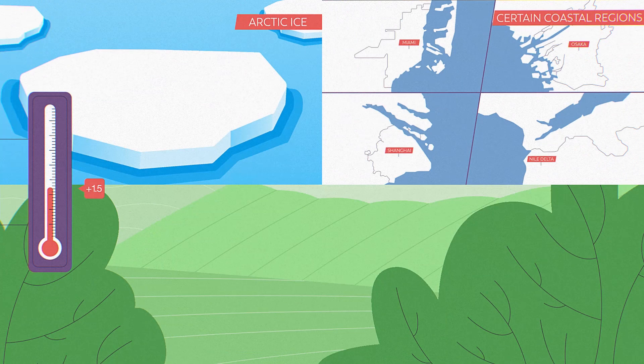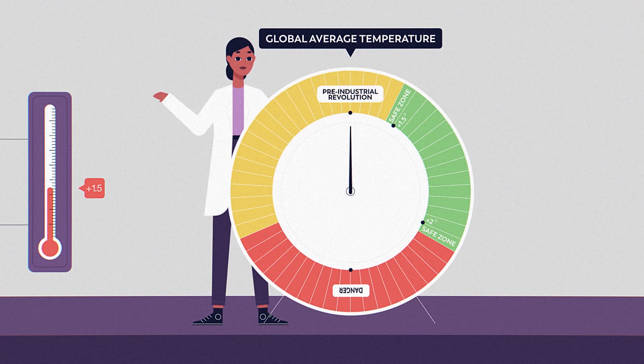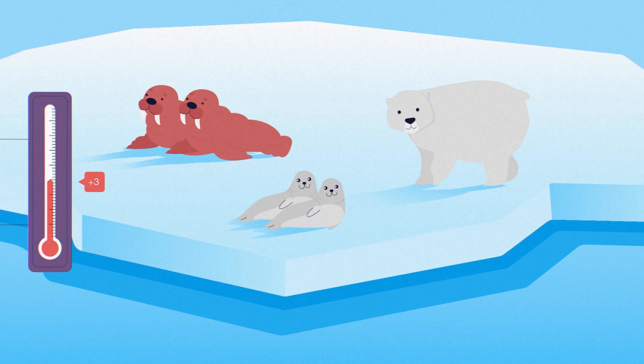Climate change is already affecting natural areas, which make up the habitat of countless species of animals. So there is a difference, right? Let's see what will happen if we push the temperature past the goal limits set by the Paris Agreement.